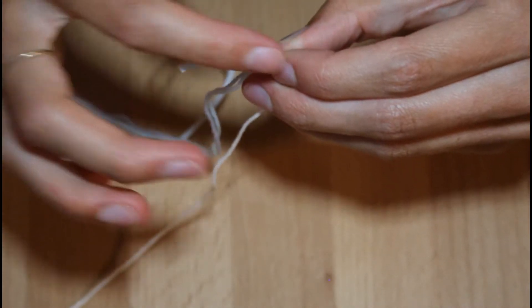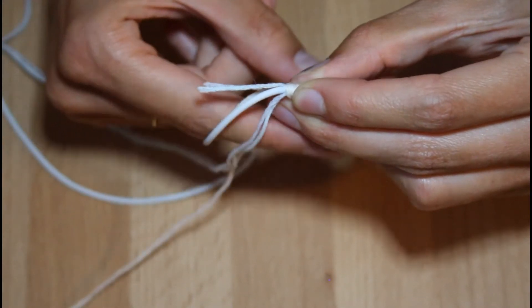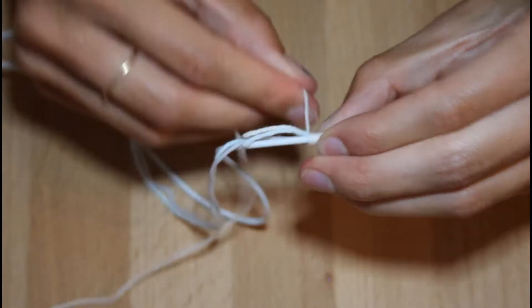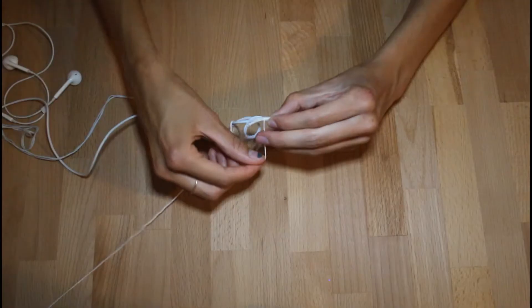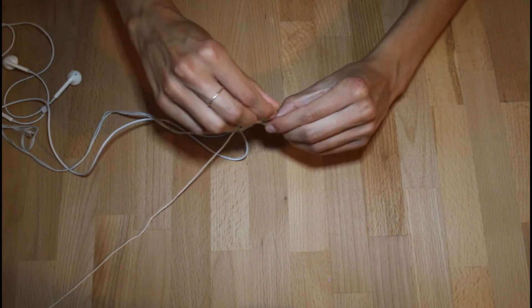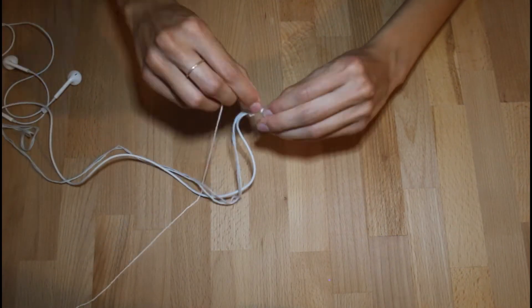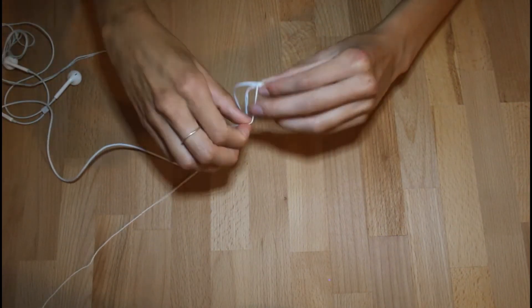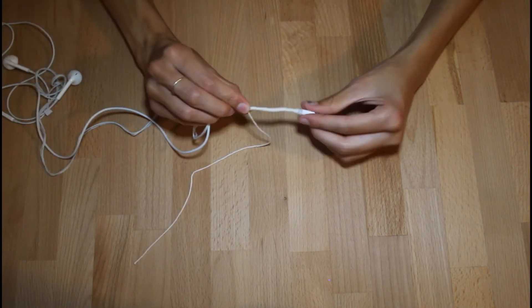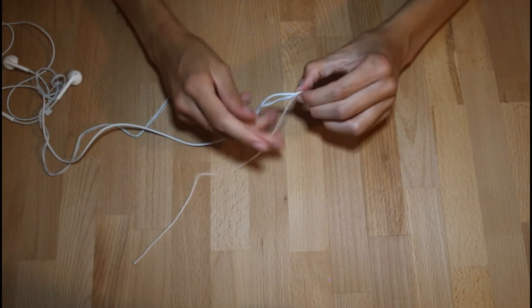I find the closer you have your fingers to where you're wrapping, the easier it is to control the cord. It will take a little bit of getting used to, but once you get the hang of it, it's quite a quick process. Just wrap until the desired length of that color and then hold on to it right there.